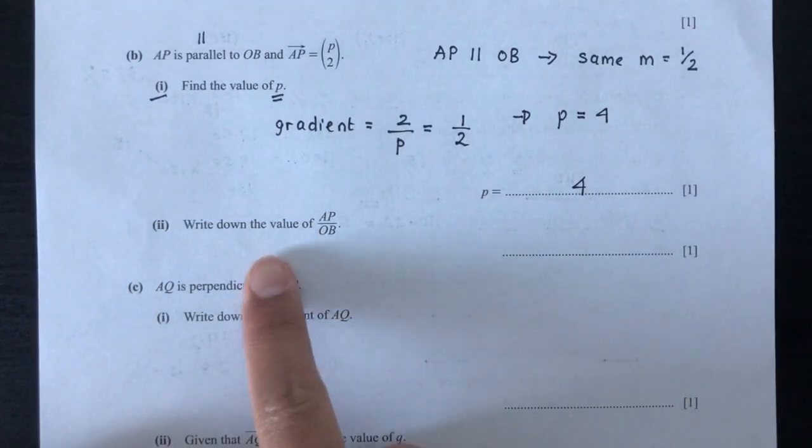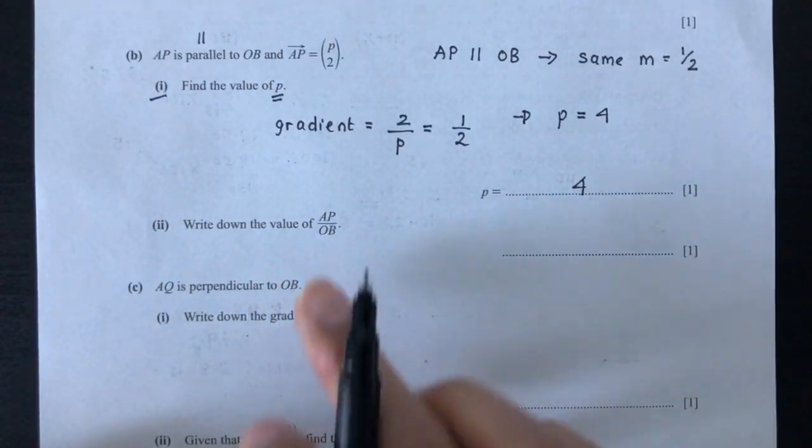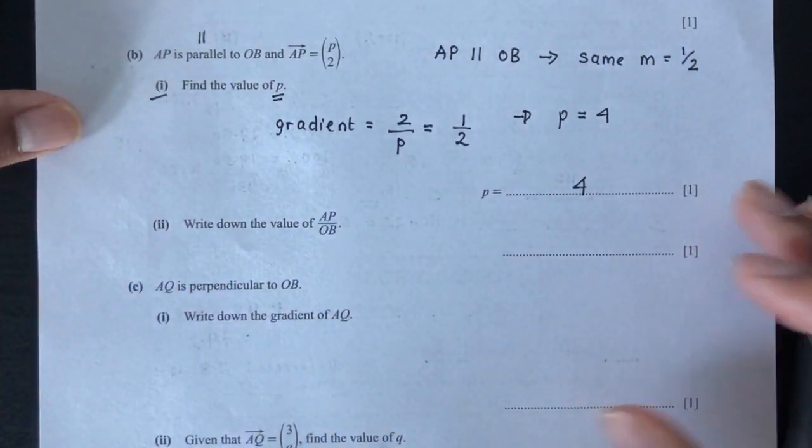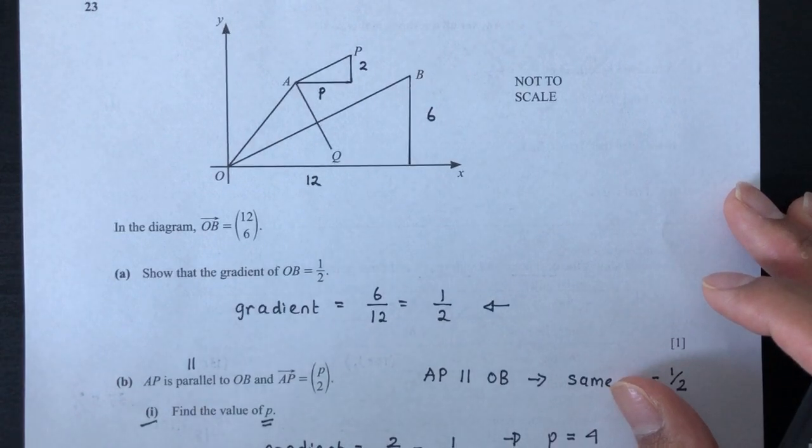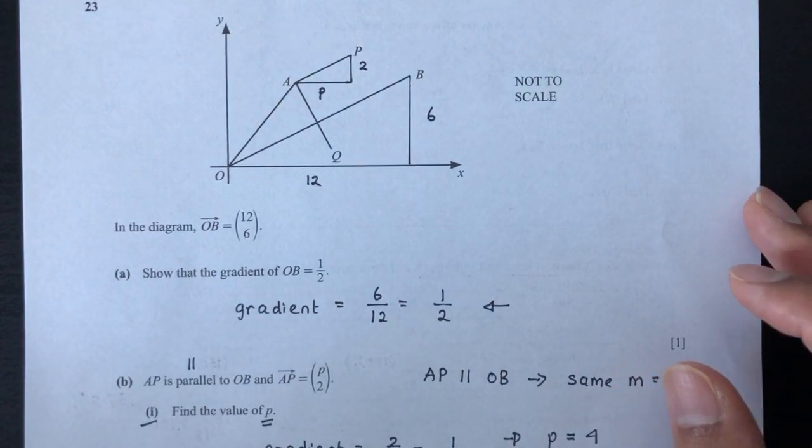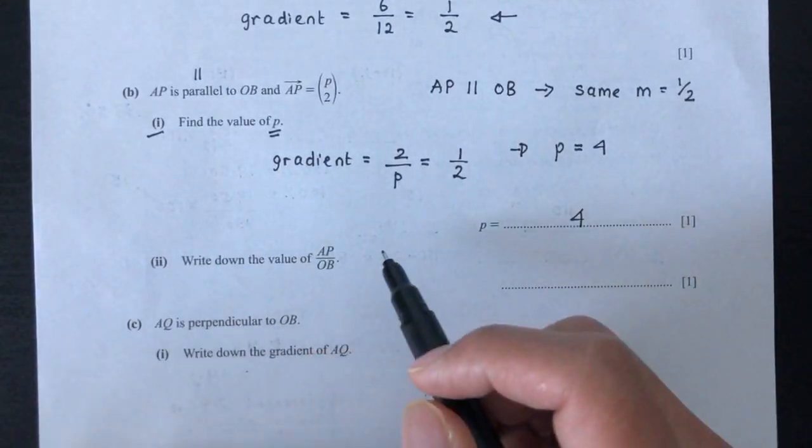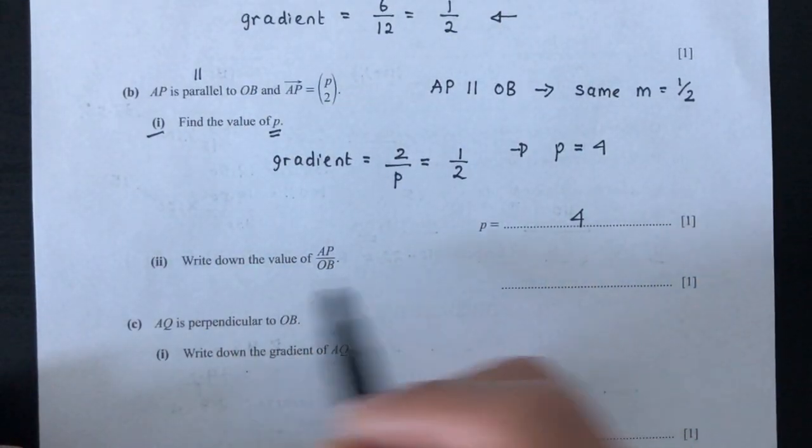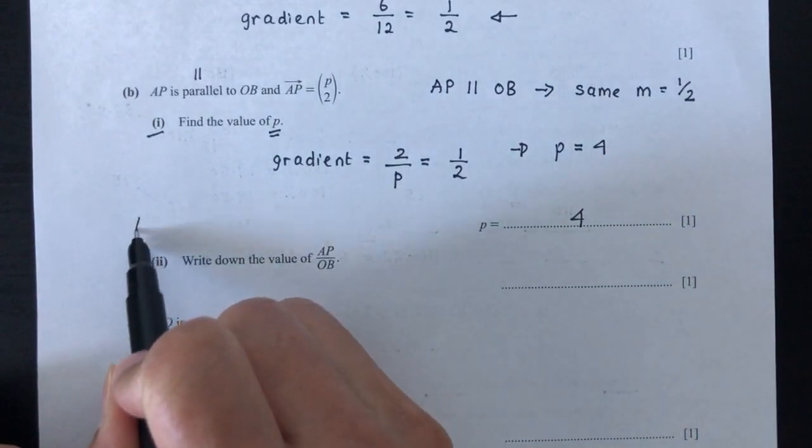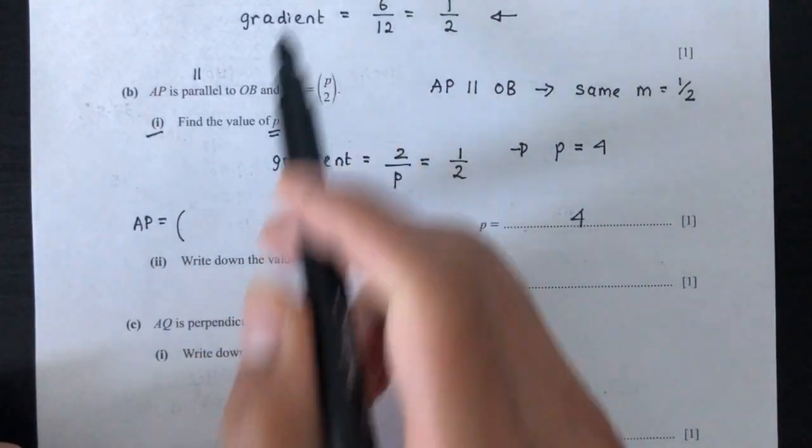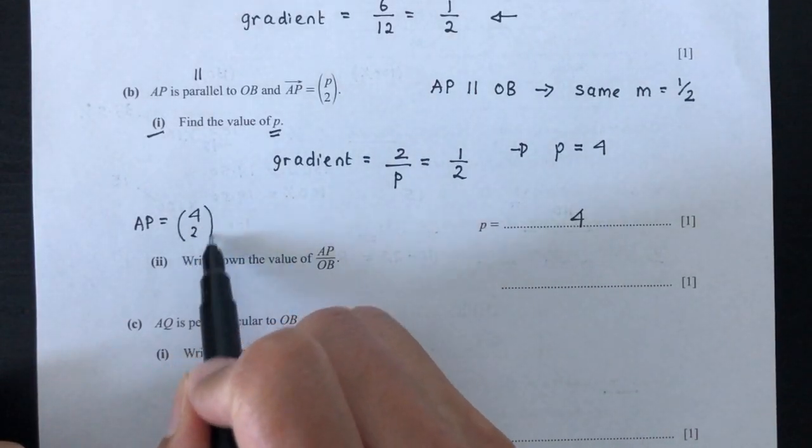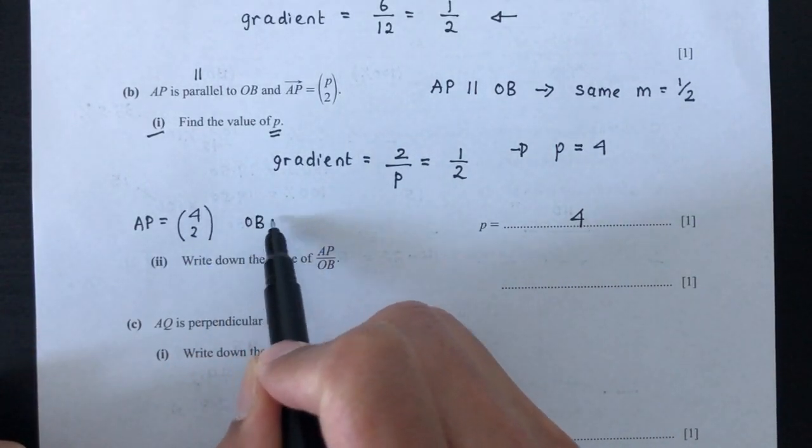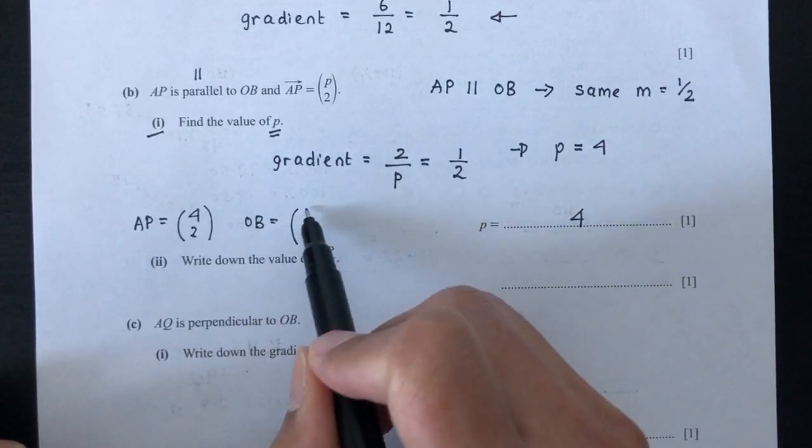Now for part 2, write down the value of AP over OB, the ratio. Now let's see what is the ratio of those two. So what did you observe that we can have from those two? If you look at these two, so let's write this down. So from the question part A and B, we have observed that AP is your vector, 4, 2, and OB is your vector, 12, 6.